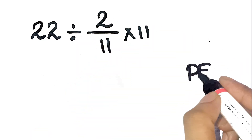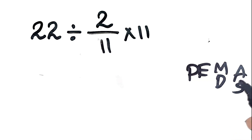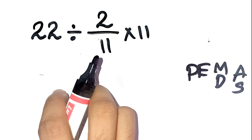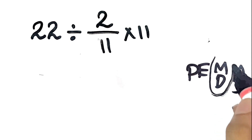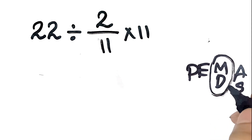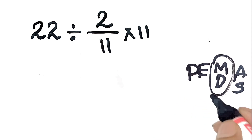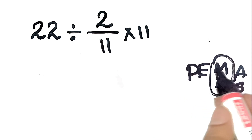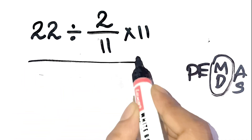You know PEMDAS — parentheses, exponents, multiplication, division, addition, and subtraction. And here's something people always forget: multiplication and division have equal priority. You don't do all the multiplications first. You actually go left to right.